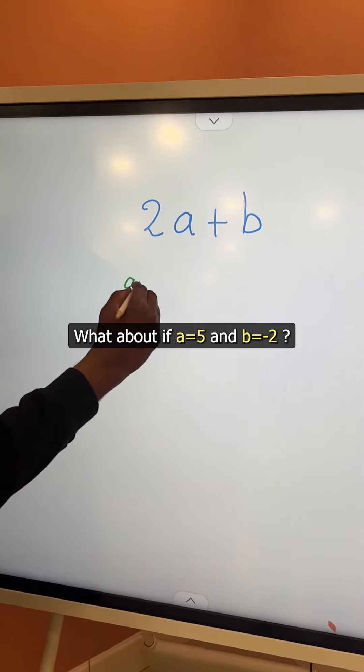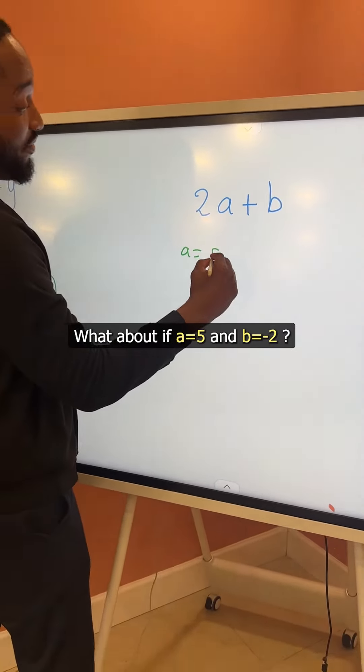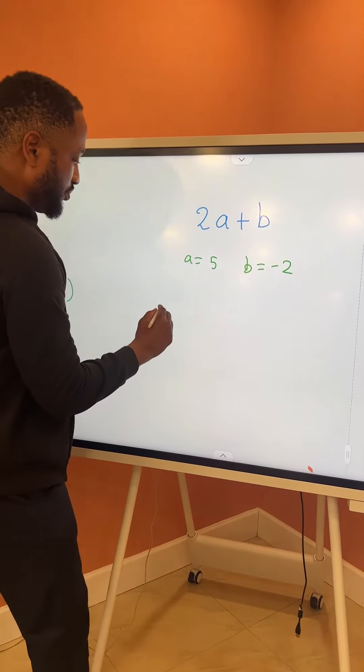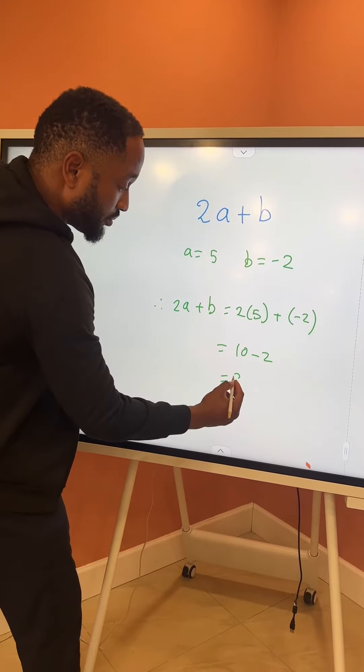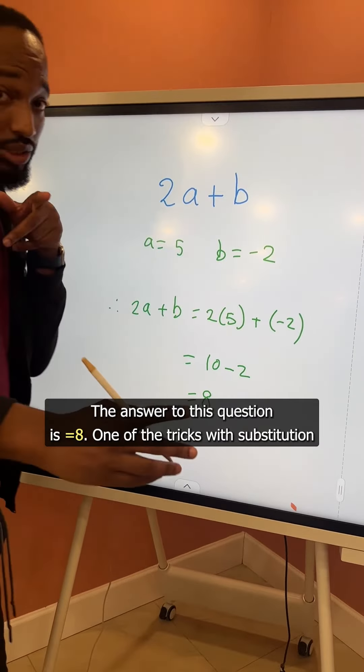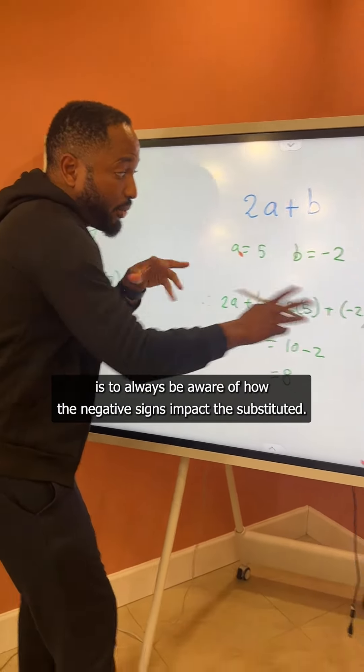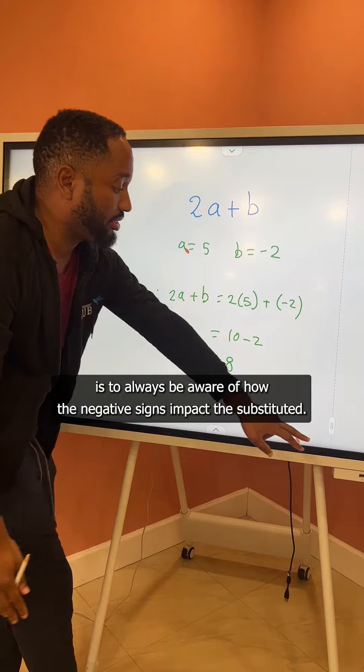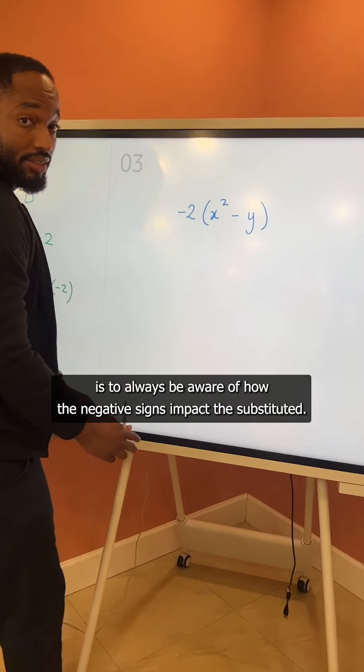What about if a is equal to 5, and b is equal to negative 2? The answer to this question is 8. One of the tricks with substitution is to always be aware of how the negative signs impact the substitution.